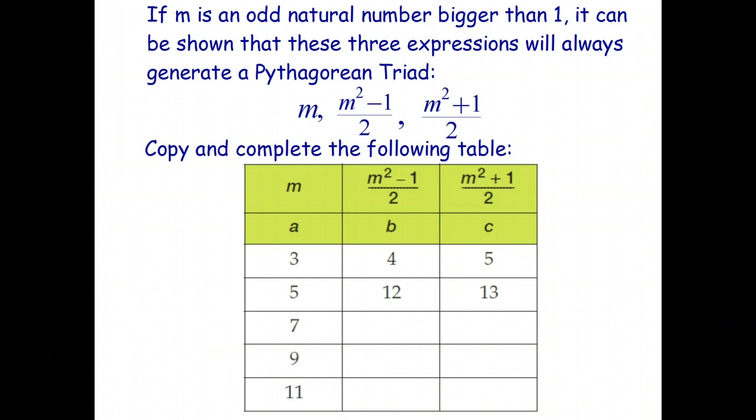So I'll just do one more, and then leave it up to you to complete the table. So let's do 7. So the smallest number is 7. 7 squared is 49, 49 minus 1 is 48, and 48 divide 2 is 24. And for the third number, we go, oh, I'll put that in the wrong place. And 7 squared is 49, plus 1 is 50. 50 divide 2 is 25. So 7, 24, 25 is also a Pythagorean triad, and so on.